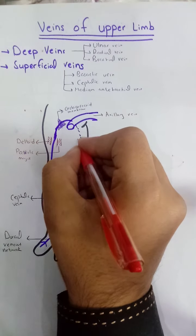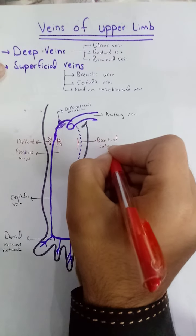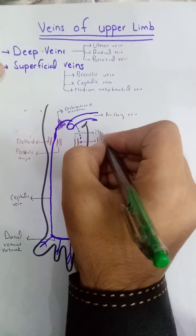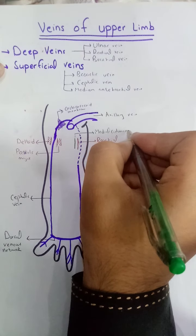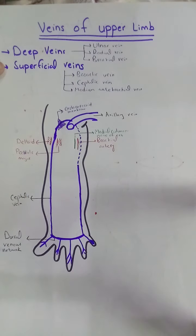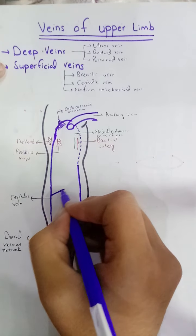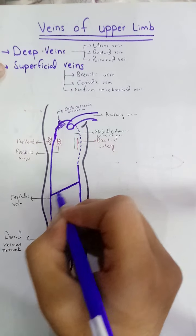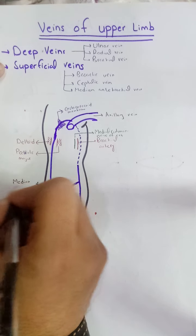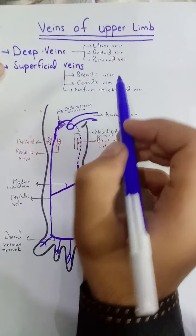The basilic vein will be parallel to two structures: the brachial artery and the medial cutaneous nerve of the arm. It will be deep at that point. These two veins — the cephalic and basilic — are connected in the cubital fossa by the median cubital vein, which is an oblique vein.